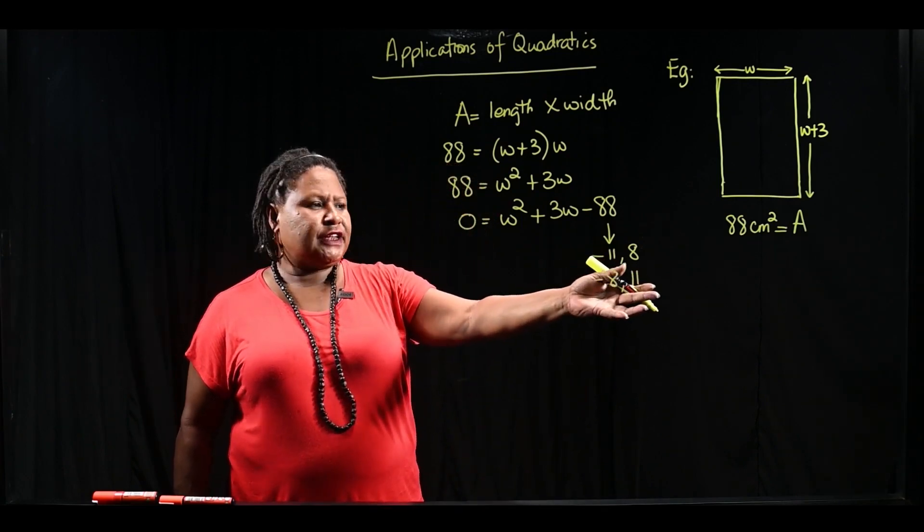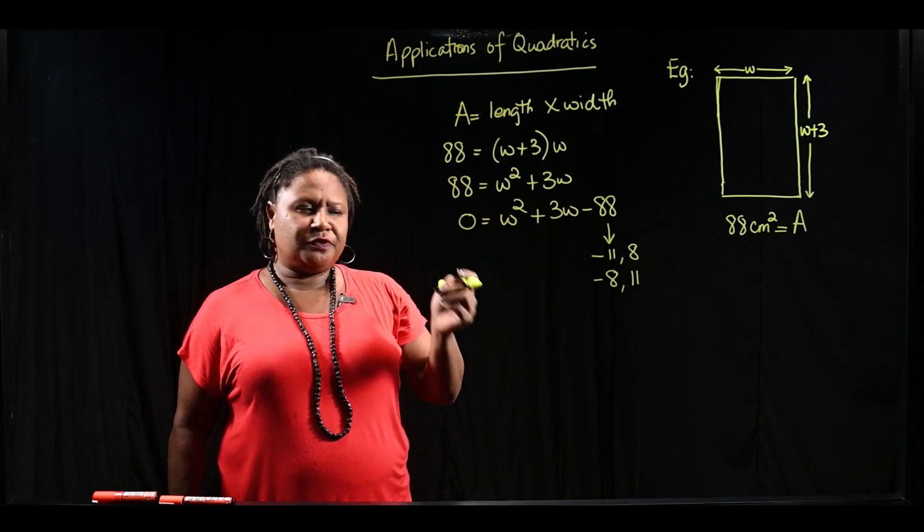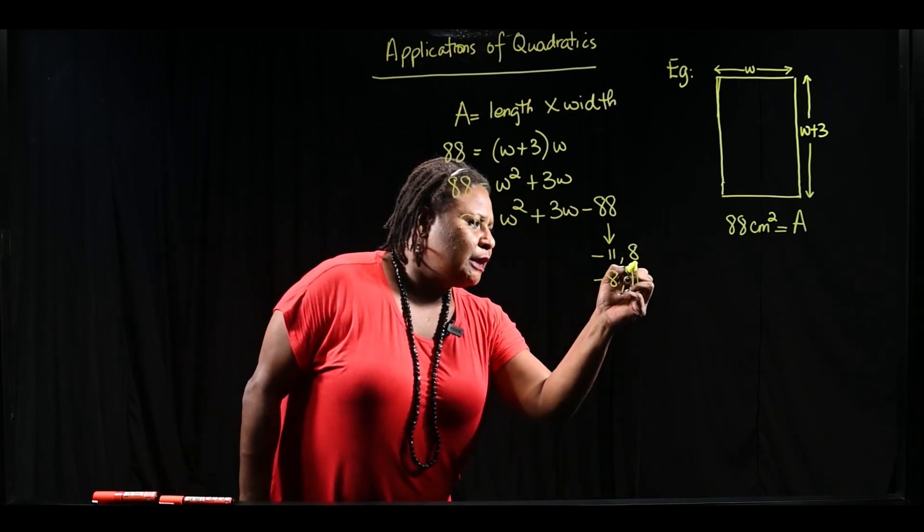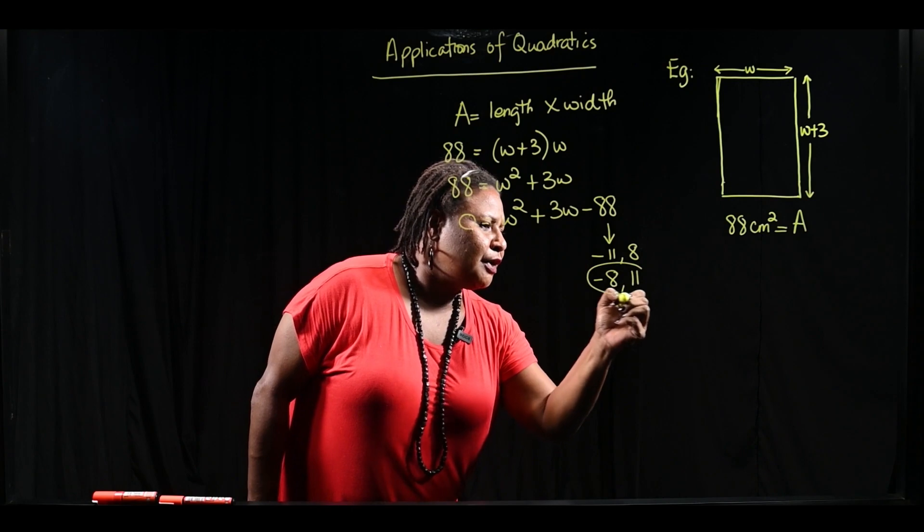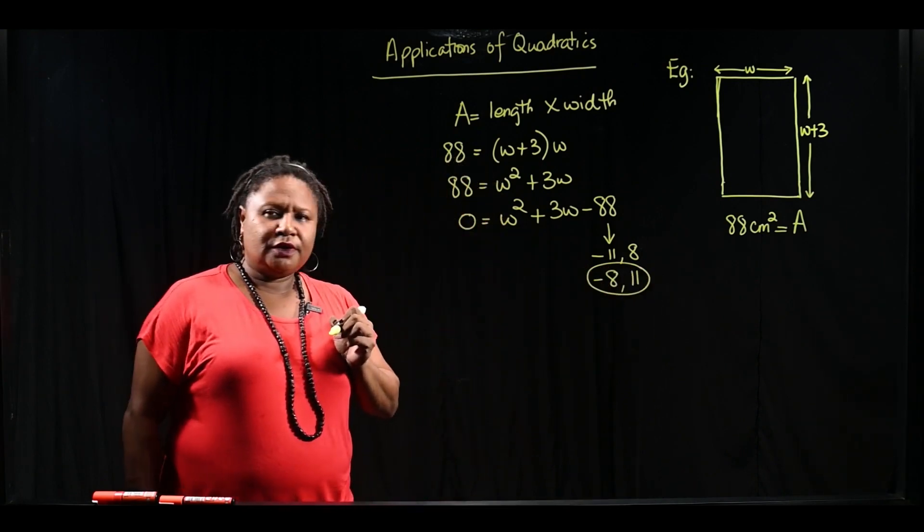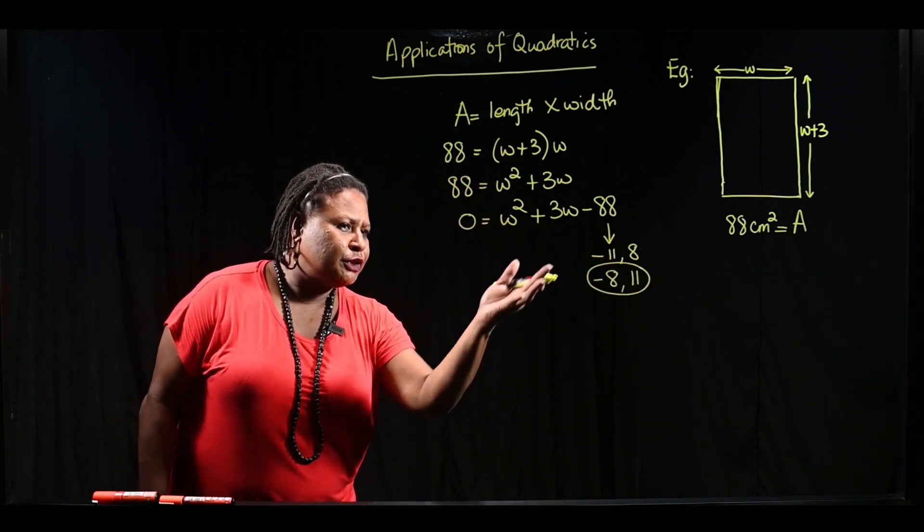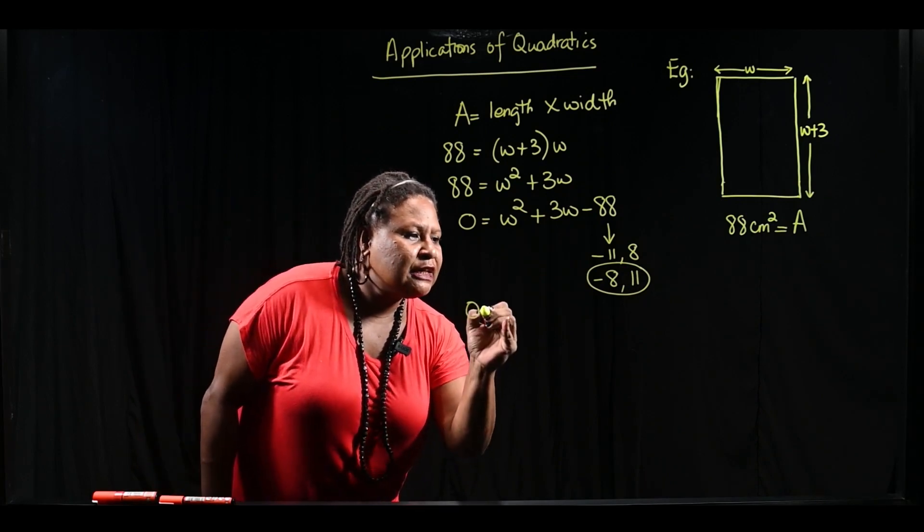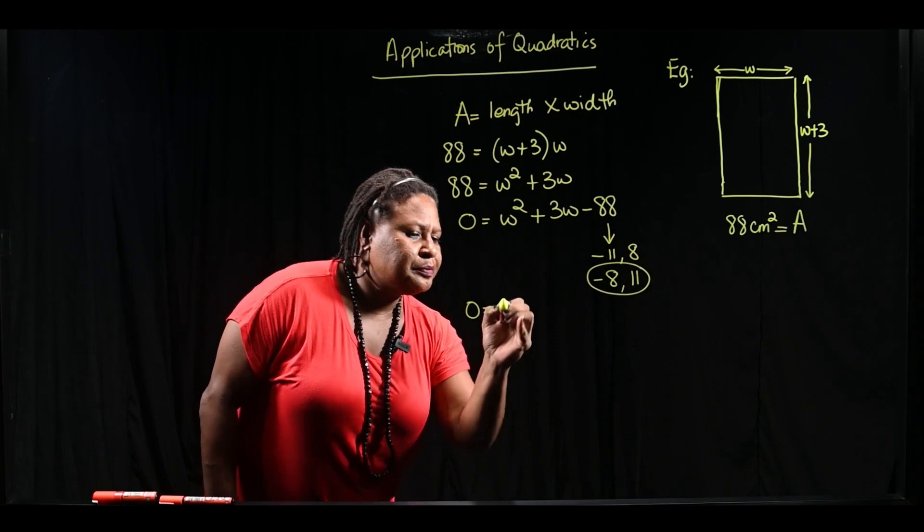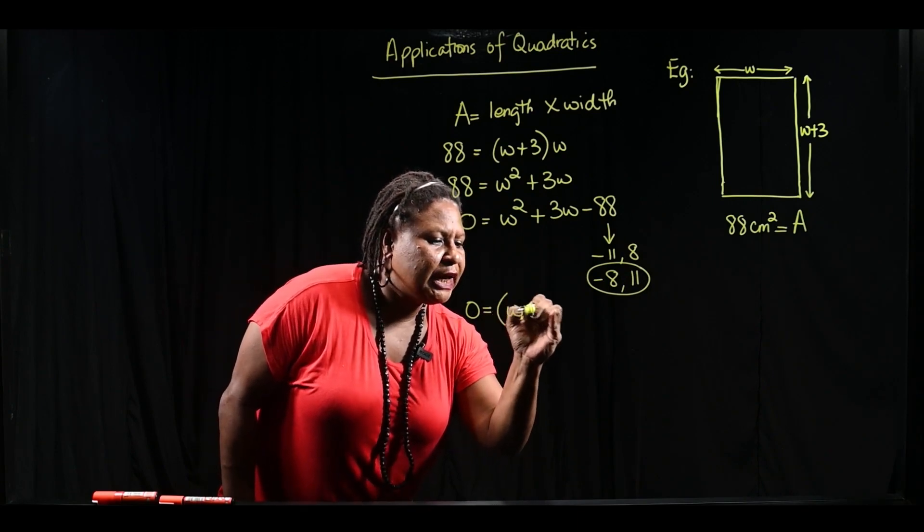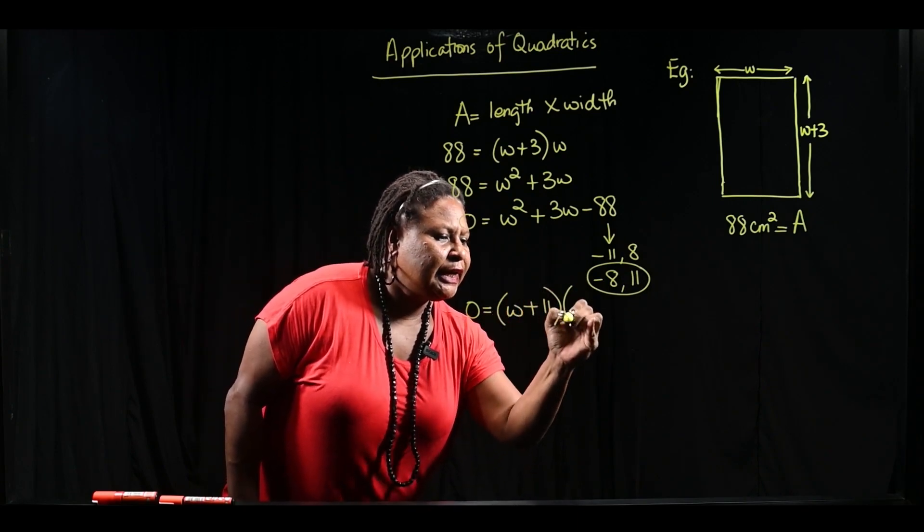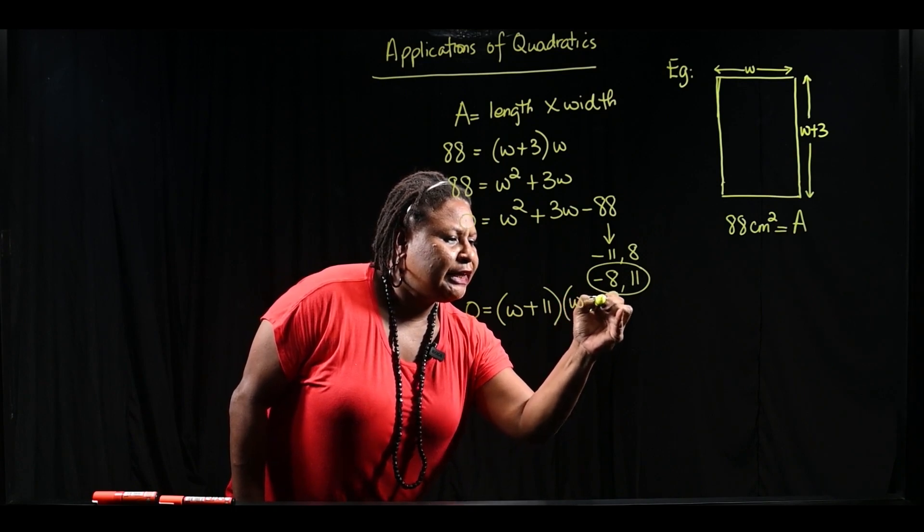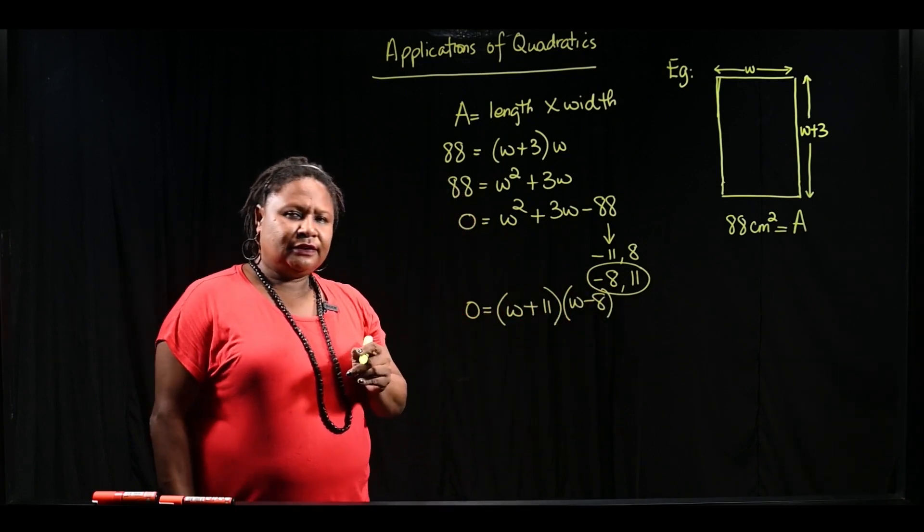Now, which pair of factors will give us a sum of positive 3? That would be the second pair of factors here. So what are we going to do with this? We have to put it in brackets as a set of factors. 0 is equal to W plus 11 and W minus 8.